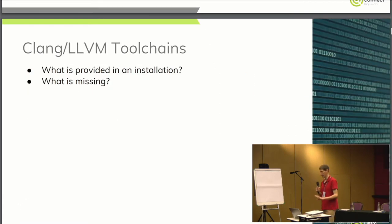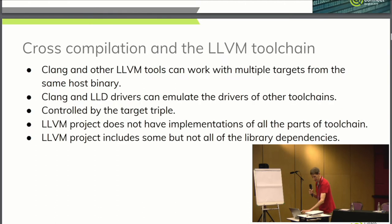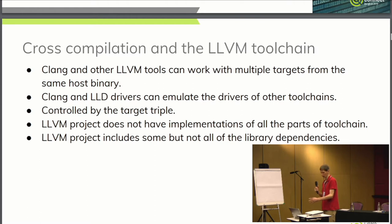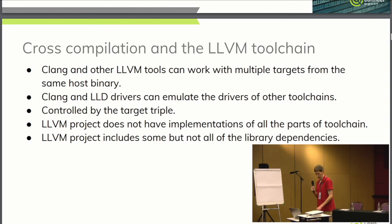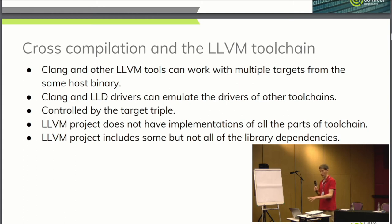Moving on to Clang and LLVM — what you actually get in an installation. Clang, in contrast to GCC, is a native cross-compiler. When you download the installation you get all targets included, so you can cross-compile for ARM, MIPS, and so on with a quick change of flags. That's quite powerful if you're a compiler developer or if you want to cross-compile to multiple architectures from the same toolchain. Clang does this by emulating various compiler drivers — it can emulate the GCC driver or even the Windows MSVC compiler.